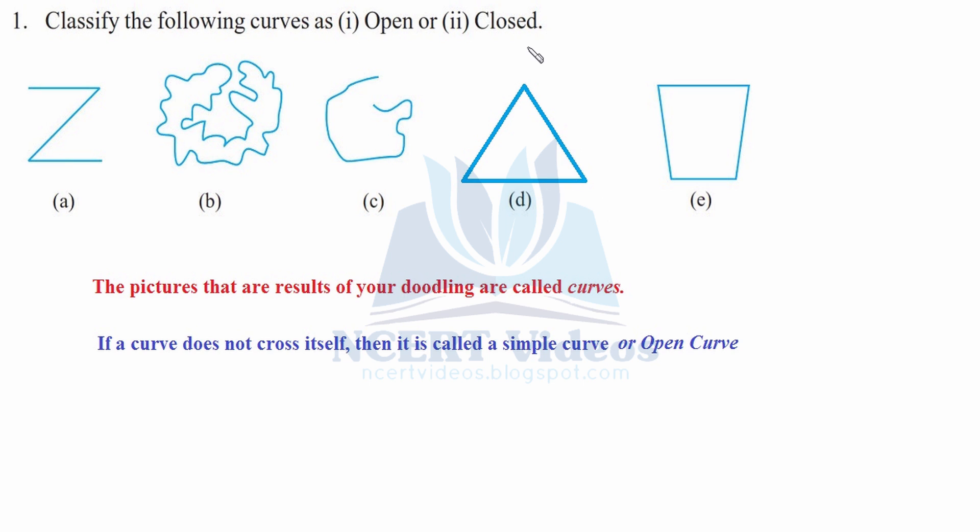Here it is a triangle. It is closed. Here it is again closed because it crosses itself. This is how you do your checking of whether it is open or closed.